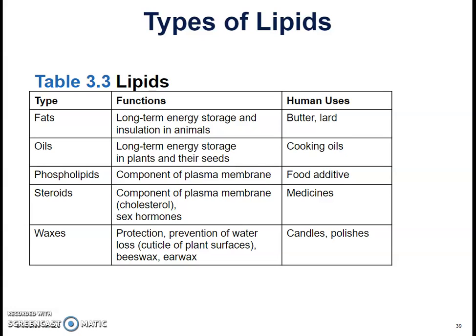Steroids are components of the plasma membrane and are used in sex hormones — so testosterone, estrogen, those kinds of things. We use steroids in medicine; whenever you get really sick with, like, a sinus infection, you might go to the doctor and they'll give you steroids to help you get over that. Waxes are used for protection and prevention of water loss — leaves of plants are generally waxy to keep water from escaping. Beeswax, earwax, and we humans use wax in candles and polishes.